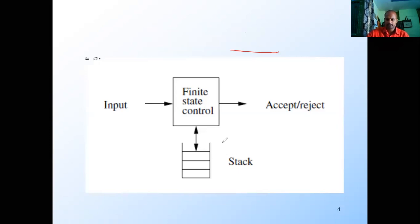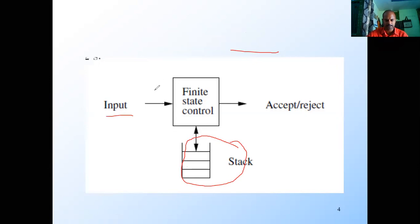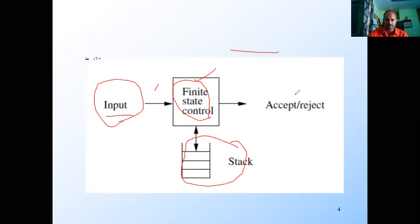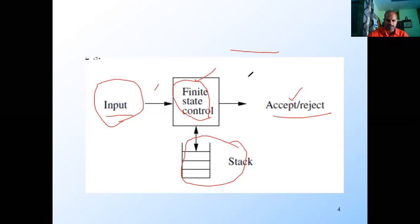In the finite automata — in NFA, DFA, or epsilon-NFA — there is no stack concept. This is the finite control. After consuming all the input, if the machine is in the accepted state then the string is accepted. If the state is a non-accepting state then the string is rejected.